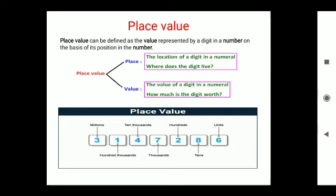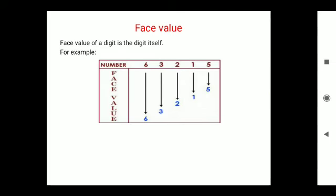If we take an example like five and six, the place is the same but the value differs: five is less than six, and six is greater than five. If we talk about face value, it is the actual value of the digit.